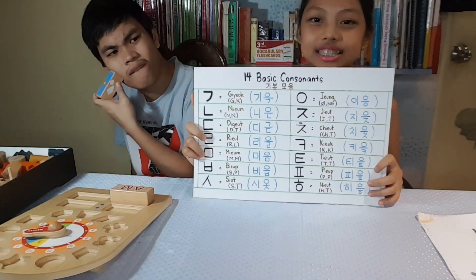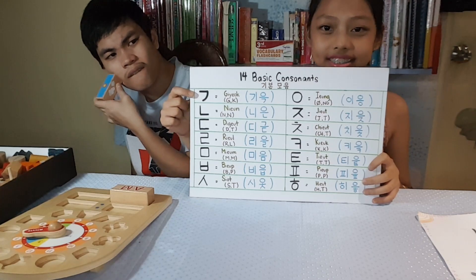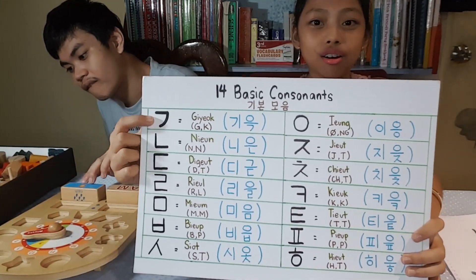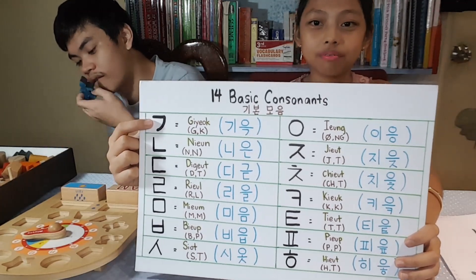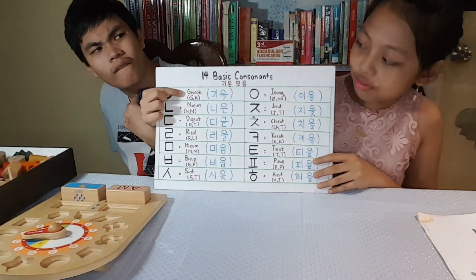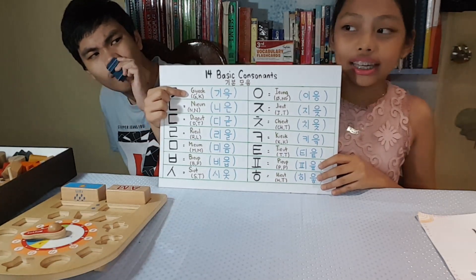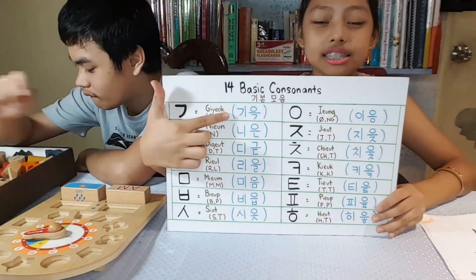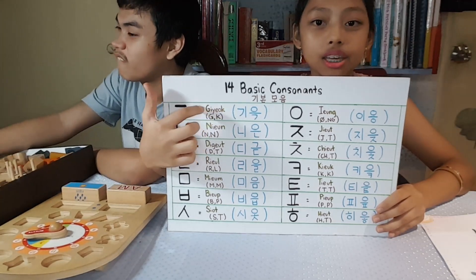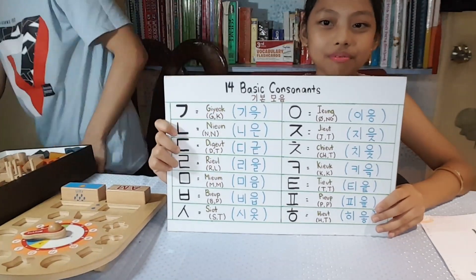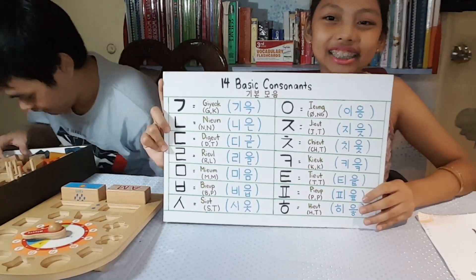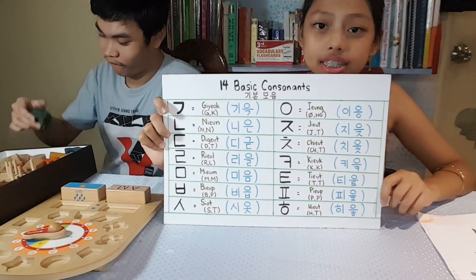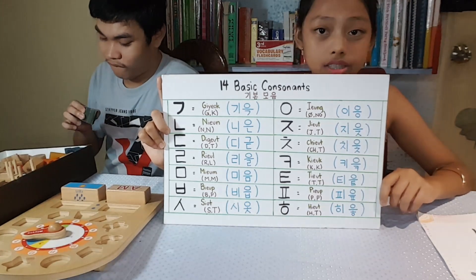Our first consonant sounds like 'Kuh!' This is the Hangul symbol or the Korean alphabet character. And over here, we have the romanization name, which is Ki-yok. This is the Ki-yok written in Korean. The consonant Ki-yok is a soft G or soft K sound in the beginning, but a K sound in the final or at the end.